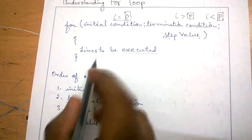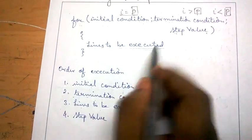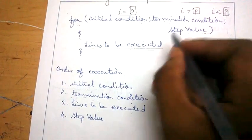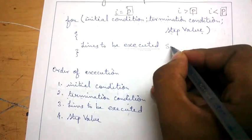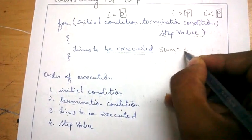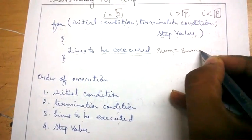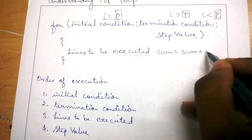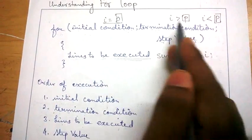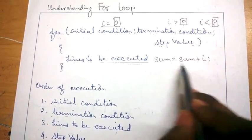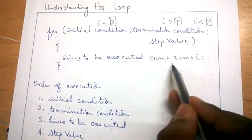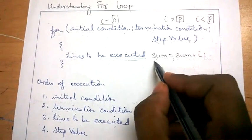Then it goes to the lines to be executed. In the lines to be executed, for example if you have to find the sum of some numbers, you can write: sum is equal to sum plus a particular value like i. Since i is changing every time, you can have multiple lines here.